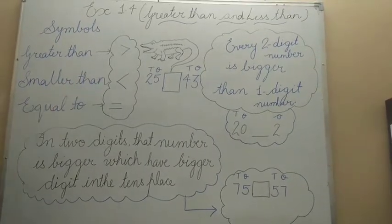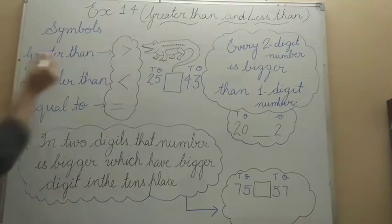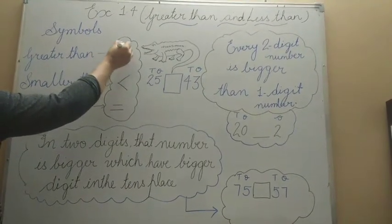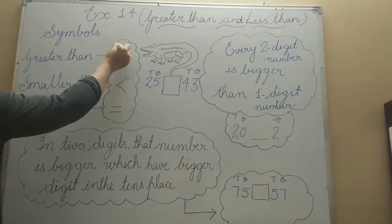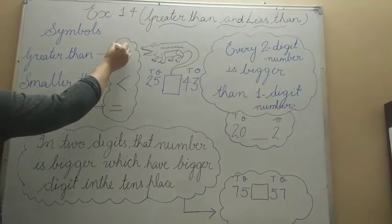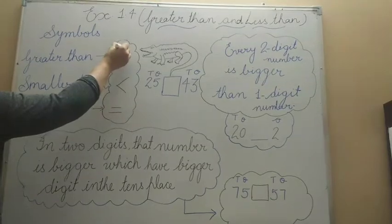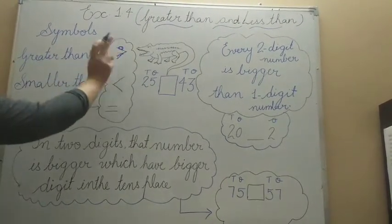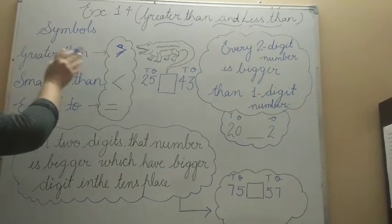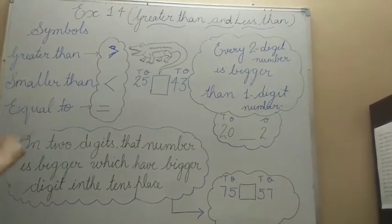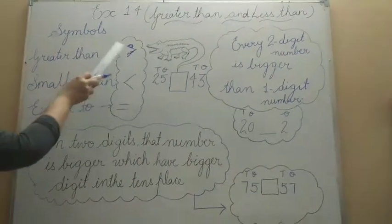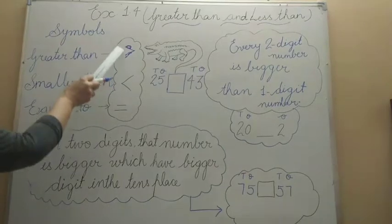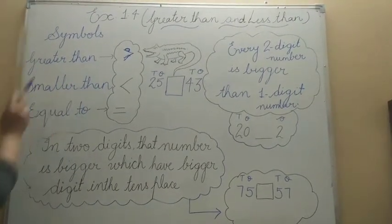You can learn this by the crocodile mouth. You can imagine that this is the crocodile mouth. You always know that a crocodile always wants to eat a large amount of fish. So we will always put this mark in front of the bigger number.